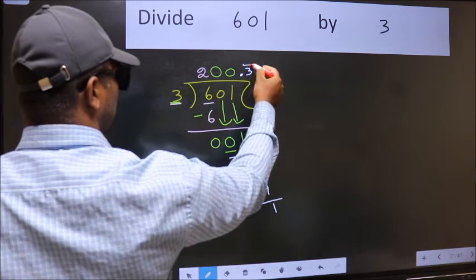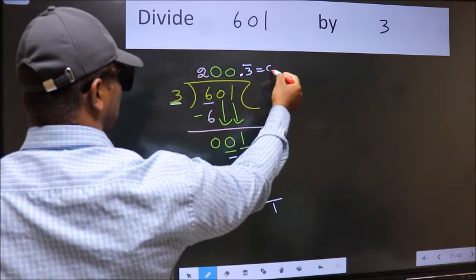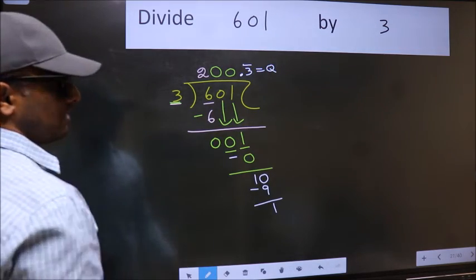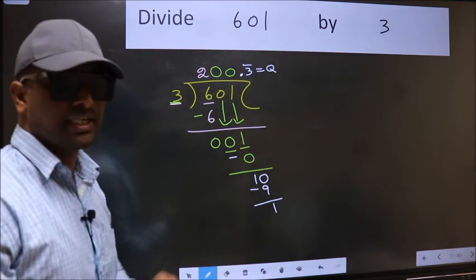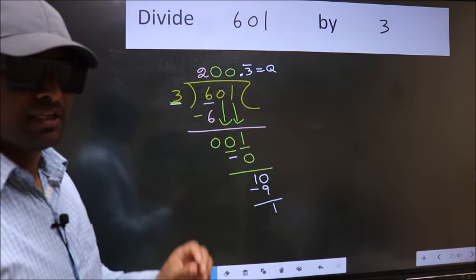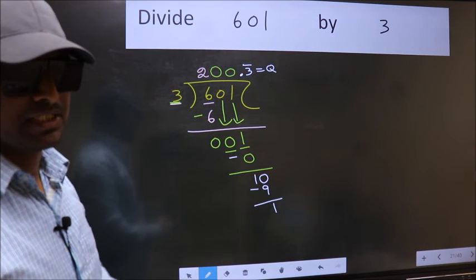That means you get bar on this number. So this is our quotient. Did you understand where does the mistake happen? You should not do that mistake.